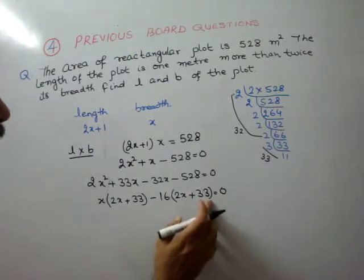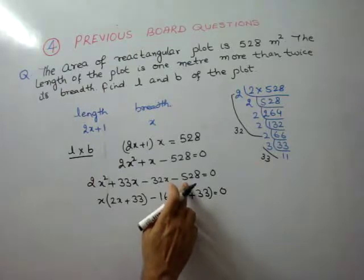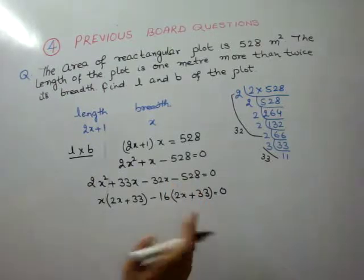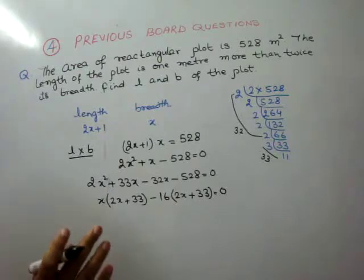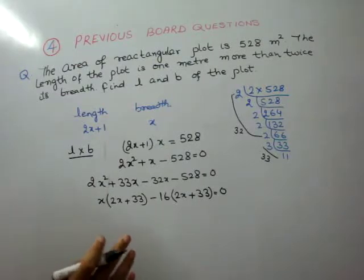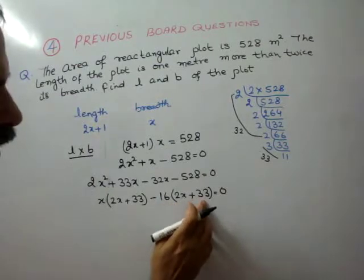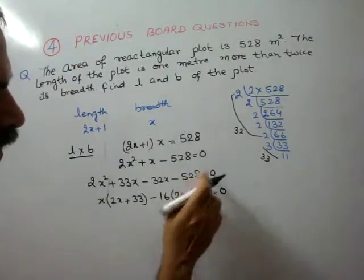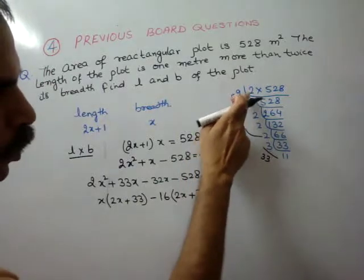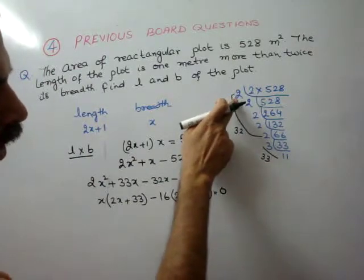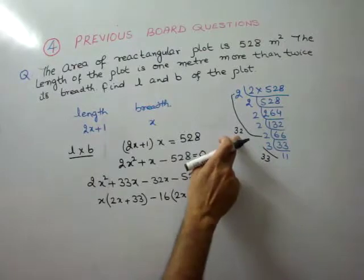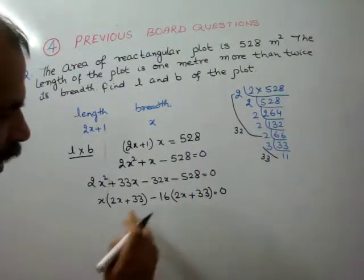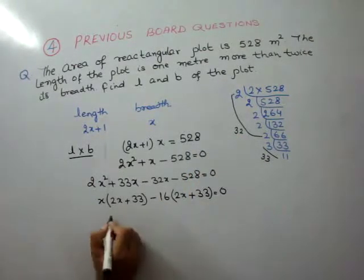16 times 33 is 528 — confirmed. Because we have written 2 on the side, if we divide by 2, we get 16. So this is exactly right. Now let's take the common brackets.